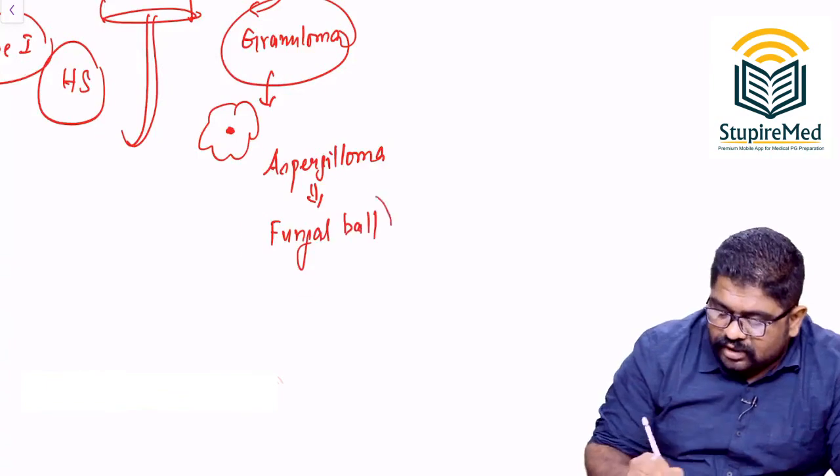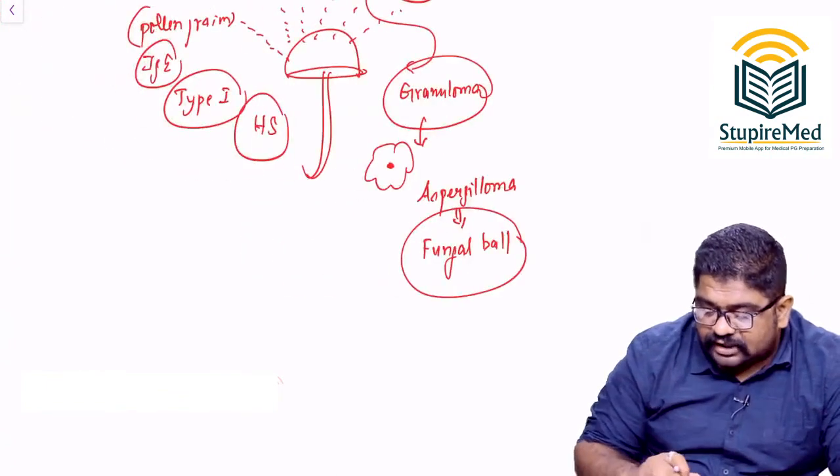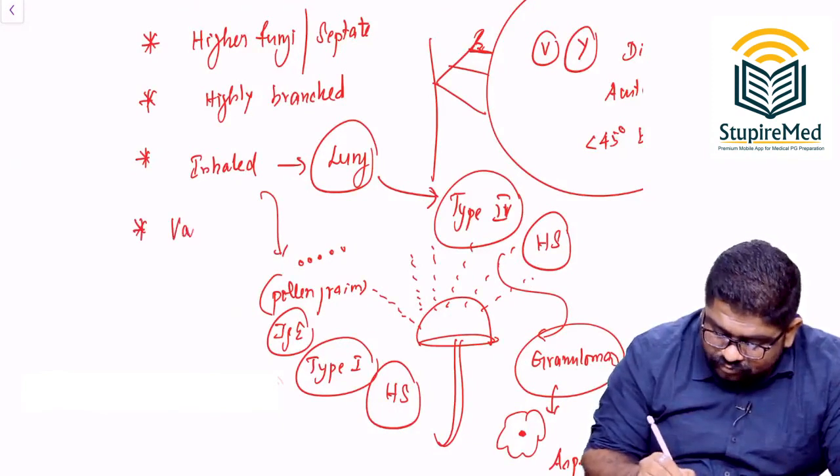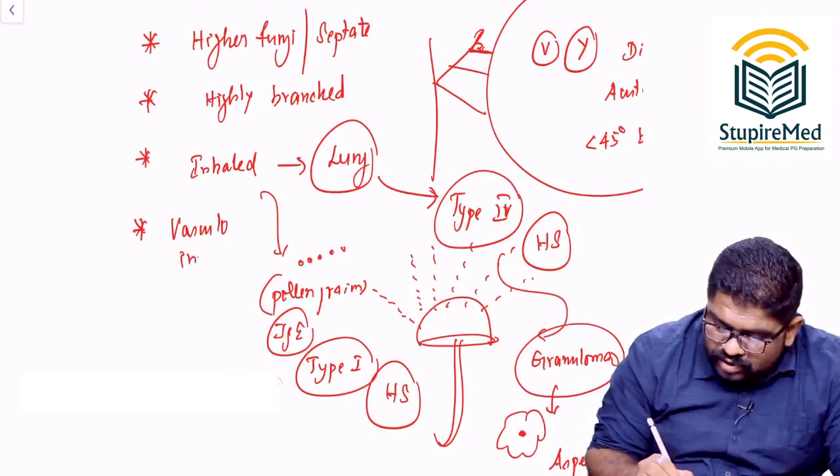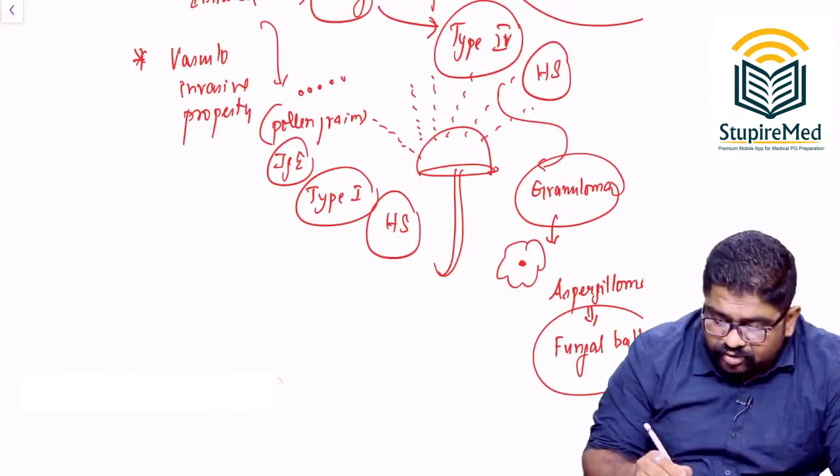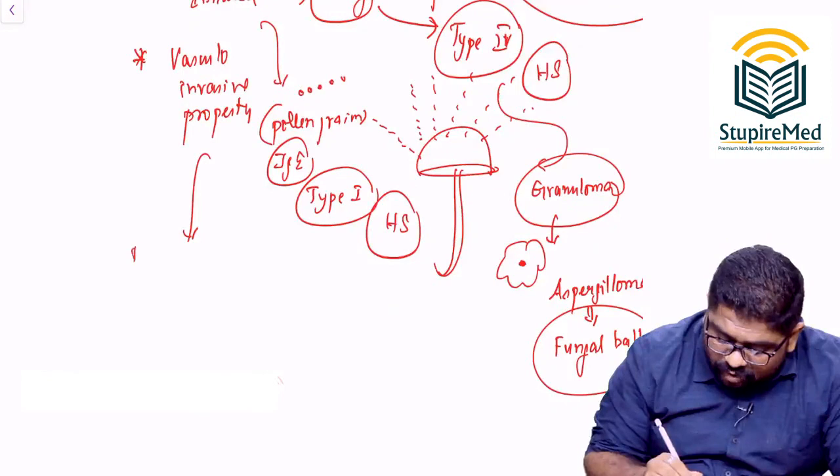So most common fungus capable of causing fungal ball would be Aspergillus and this organism has vascular invasive property. It can penetrate through the blood vessels.